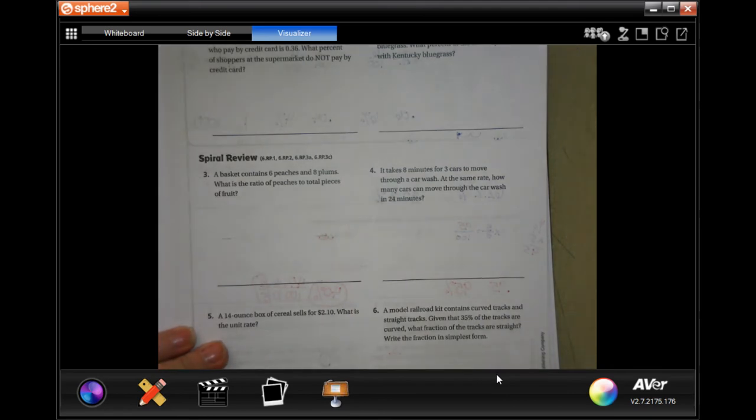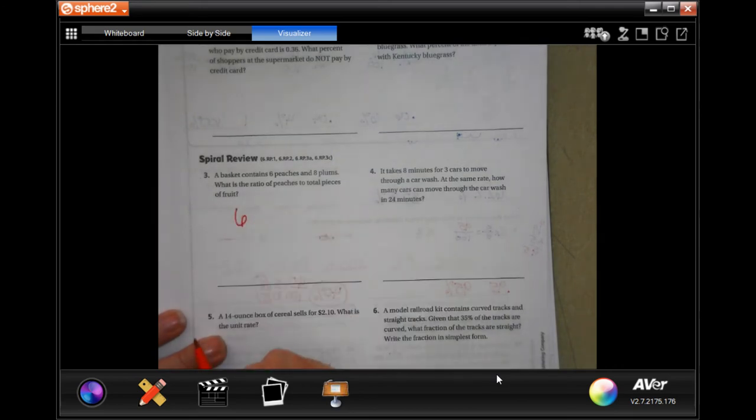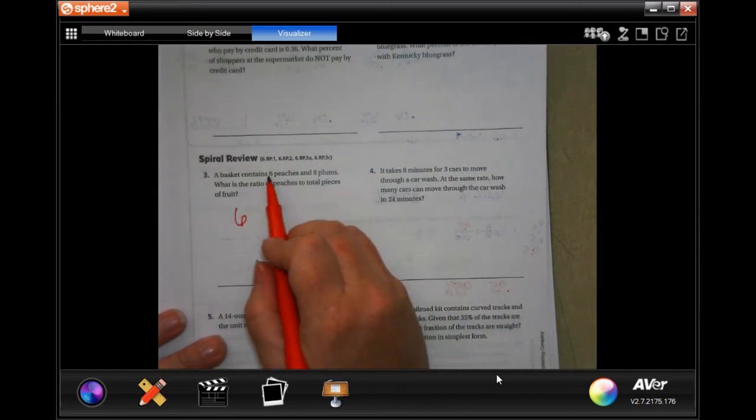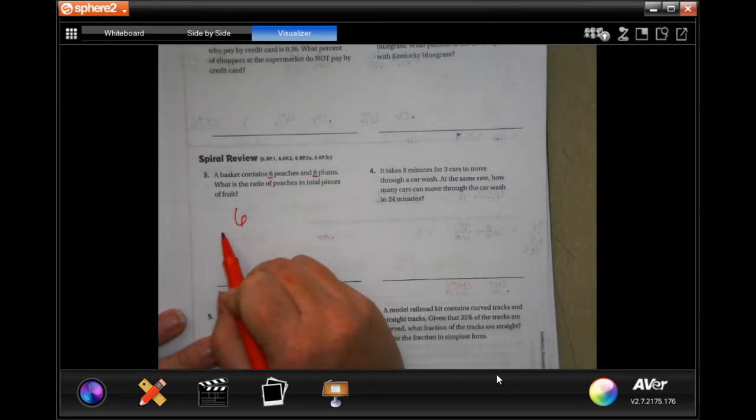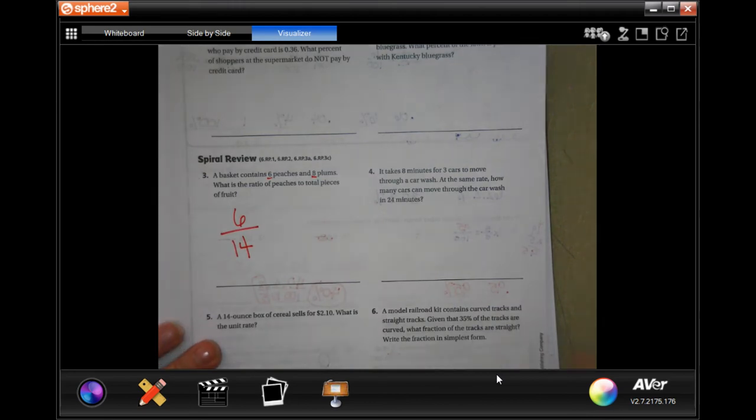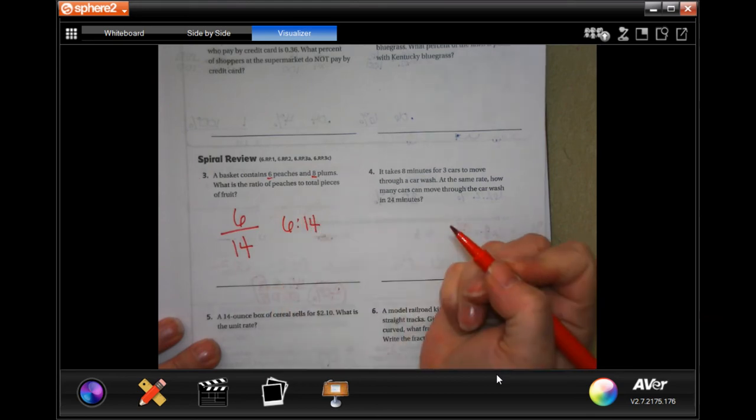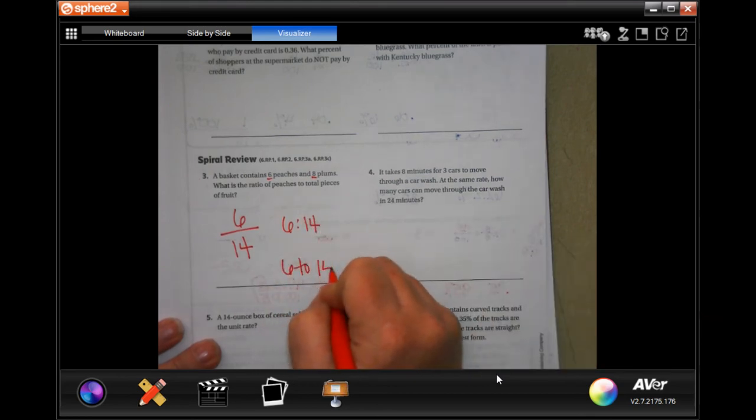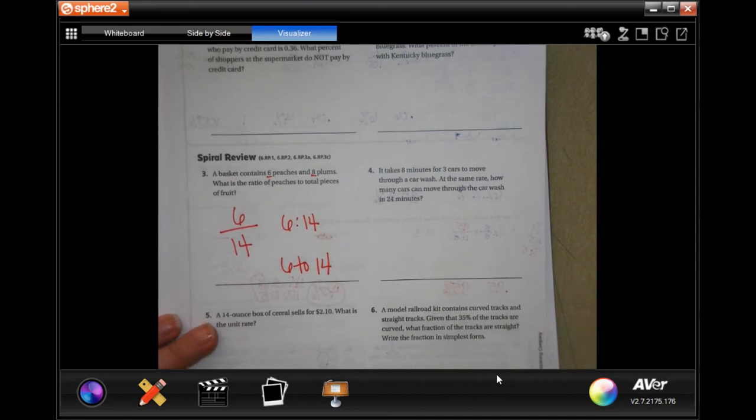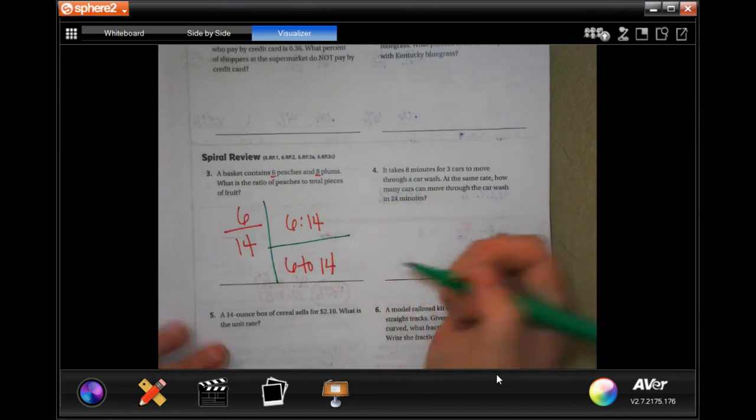We're going to do this spiral review. A basket contains 6 peaches and 8 plums. What is the ratio of peaches to the total pieces of fruit? So, peaches is 6. Total pieces of fruit, there's 6 plus 8. That's 14. That's your ratio. So, you can write 6 over 14, 6 colon 14, or 6 to 14. Take your pick.